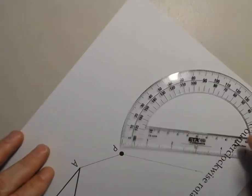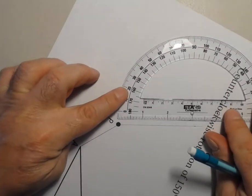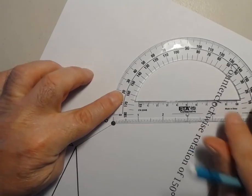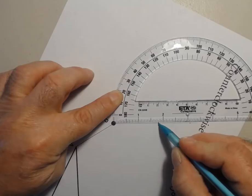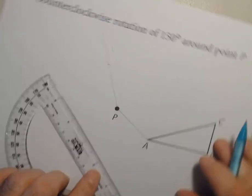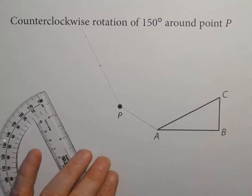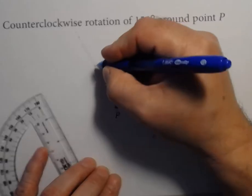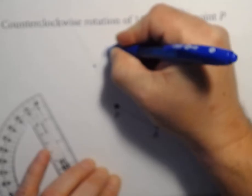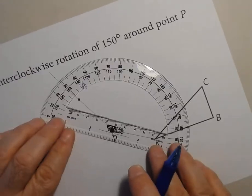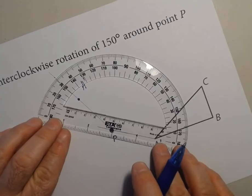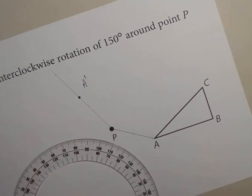I'm going to go ahead and put this here and count off: nine, ten, eleven, twelve, thirteen — so here is going to be the location of A prime. I'll mark this in blue and label it A prime. This right here is a 150 degree angle that we just created. Now we need to do the same for the other two points.